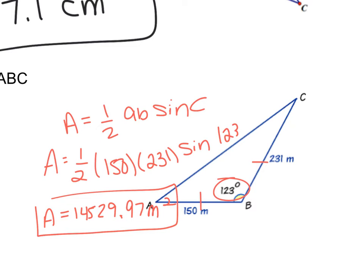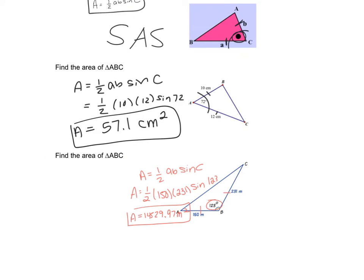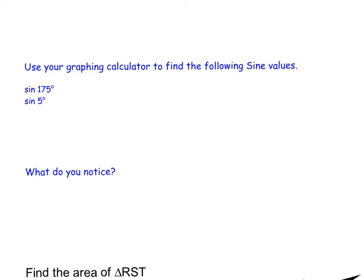We're going to go on to the next example. Right now it says use your graphing calculator to find the following sine values. This isn't multiple choice. You actually have to type this out into your calculator.